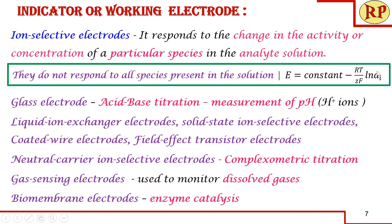The various types of ion selective electrodes include: the glass electrode, commonly used for pH determination and acid-base titrations; liquid ion exchange electrodes; solid state ion electrodes; coated wire electrodes; field effect transistor electrodes; neutral carrier ion selective electrodes used for complexometric titrations; gas sensing electrodes for monitoring dissolved gases; and biomembrane electrodes, where an enzyme within the membrane acts as a catalyst. A separate session is needed to discuss ion selective electrodes in detail.